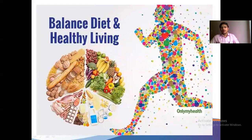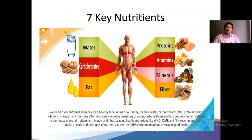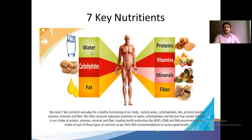Coming to the second part — balanced diet or healthy living. A balanced diet must contain carbohydrates, protein, and fats (macronutrients), vitamins and minerals (micronutrients), fiber (under carbohydrates), and water. These seven key nutrients are very important in balanced form in our daily diet.